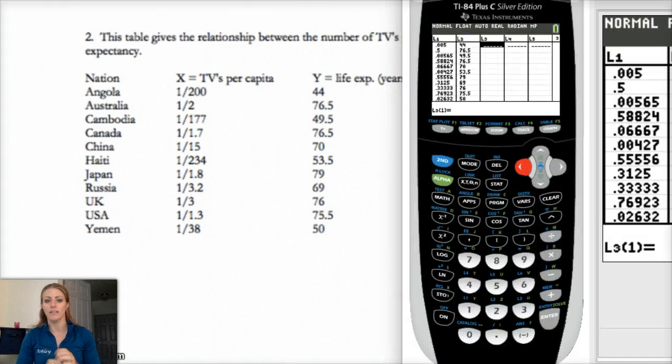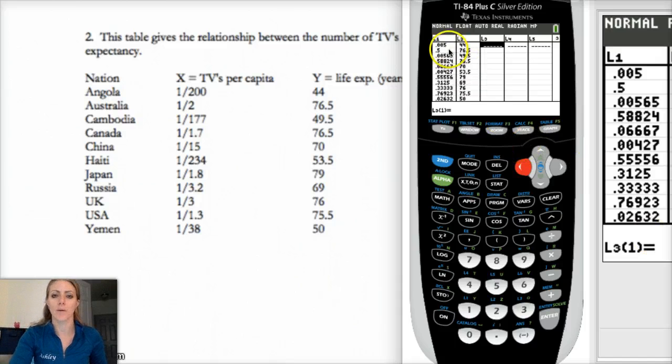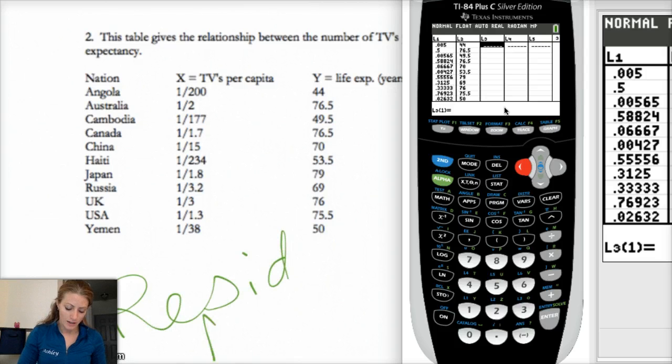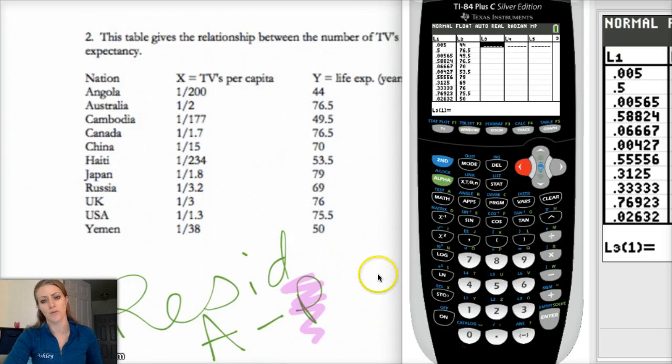Okay, so here I've entered my data. So conceptually, to make a residual plot, I need to make a list of the residuals of all the Y values. So L1 is my X, L2 is my Y. So I need to find my residuals. Now remember, your residual is your actual Y value minus your predicted Y value. And in order to get the predicted Y value, we need the line of, or the least squares regression line.